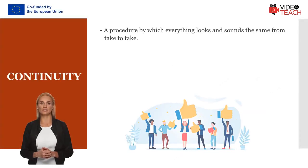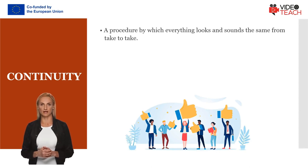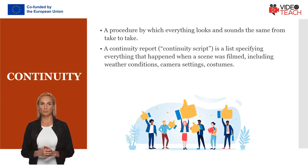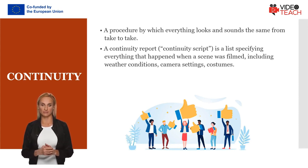Continuity is the procedure by which everything looks and sounds the same from one take to the other. A continuity report, otherwise known as a continuity script, is a list specifying everything that happened when a scene was filmed, including weather conditions, camera settings, costumes, and so on.